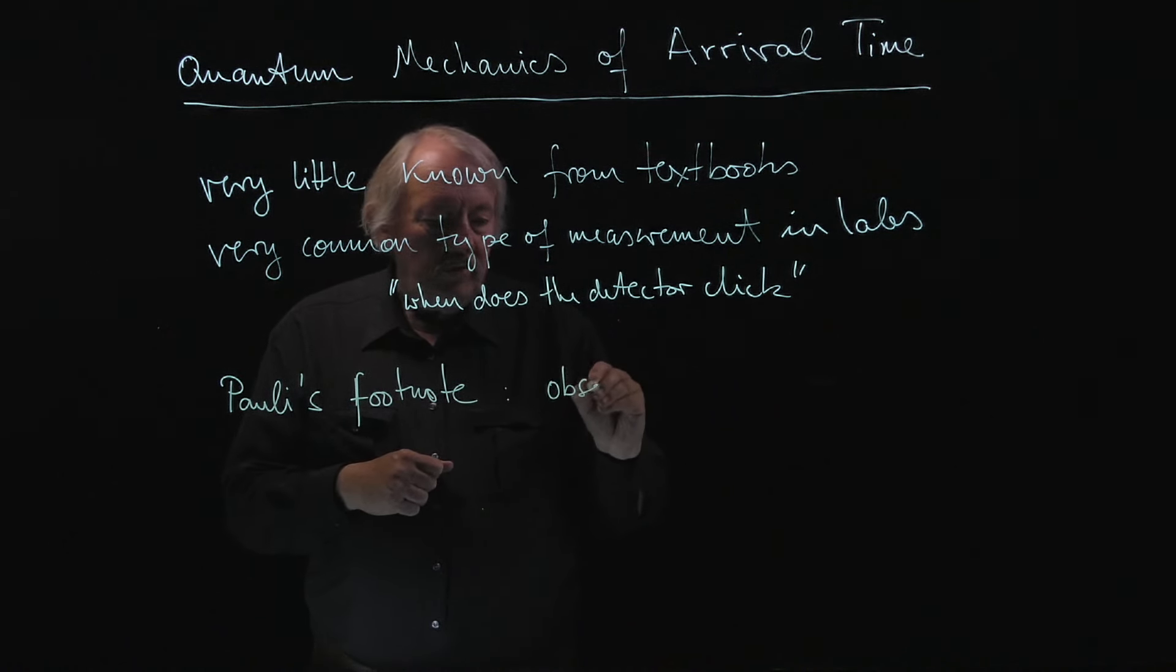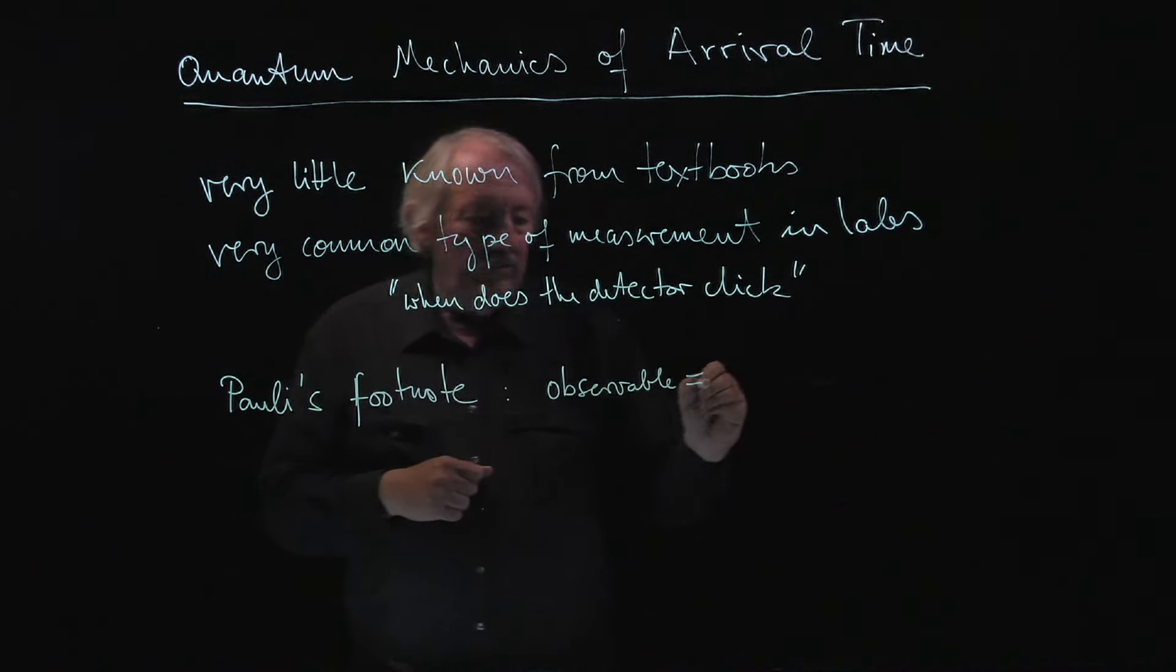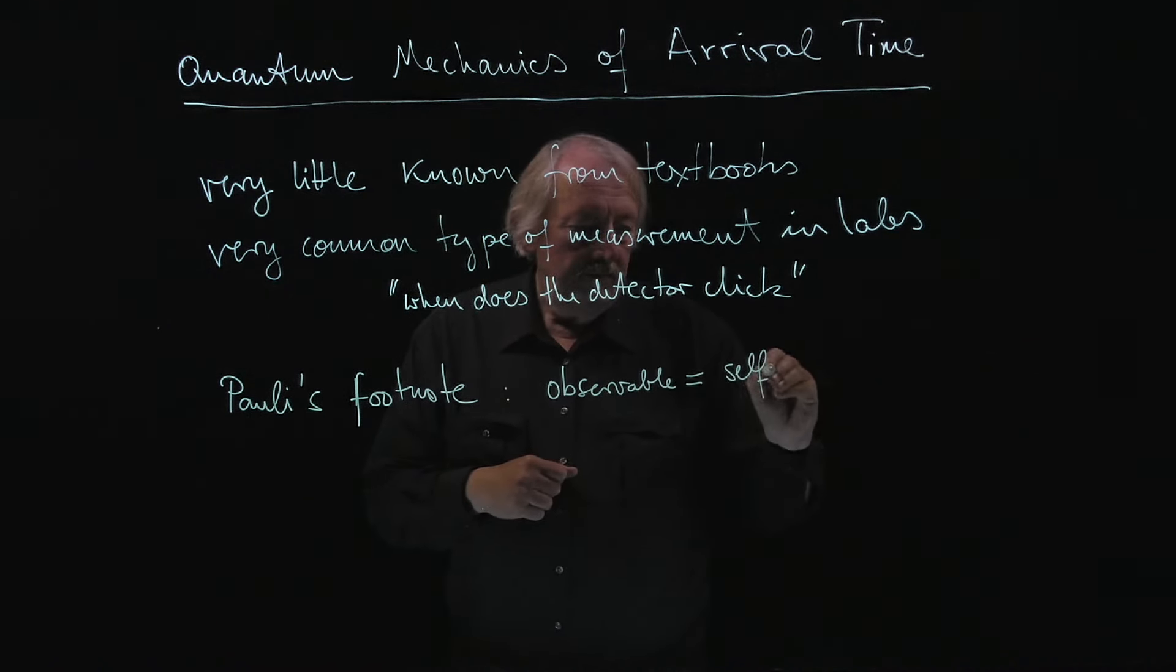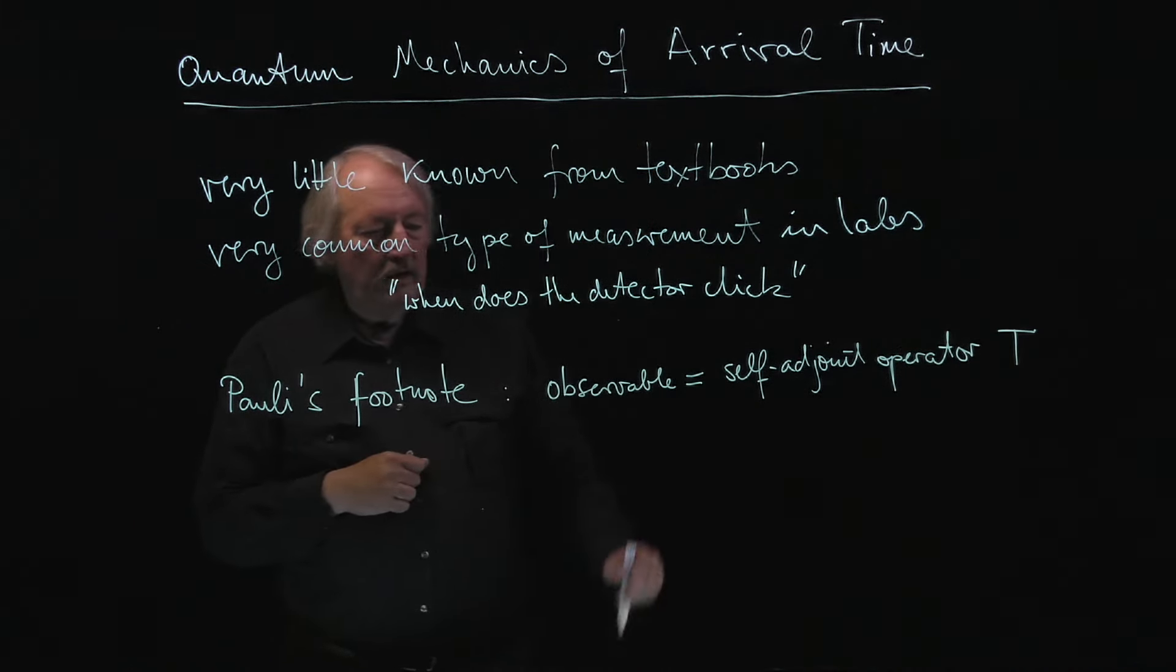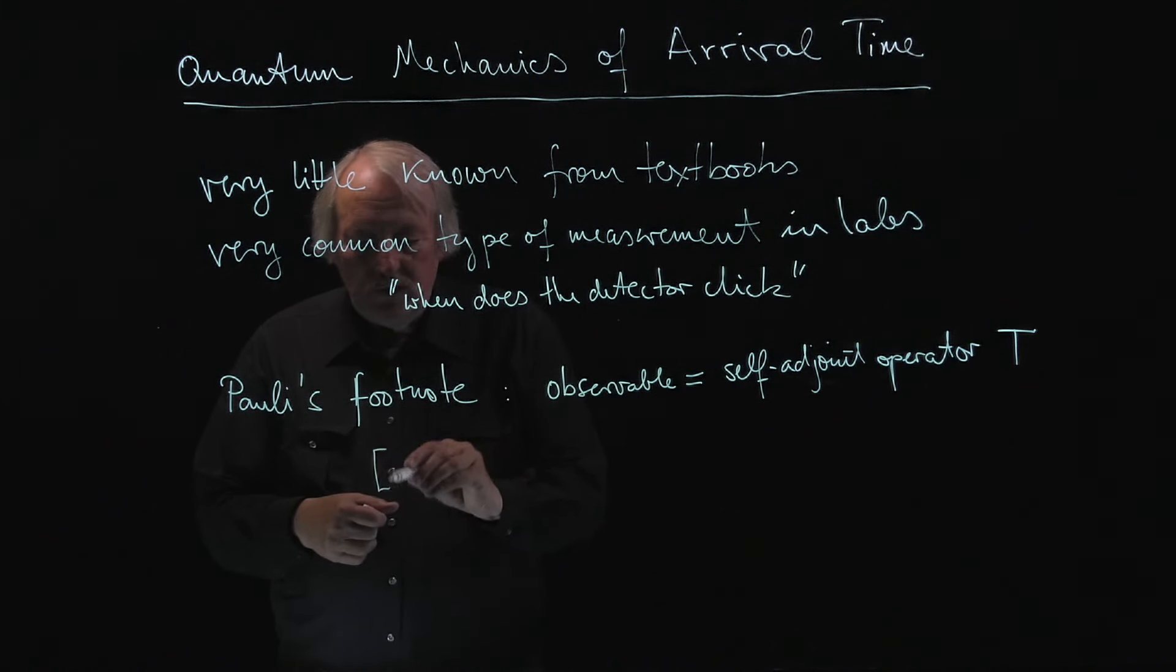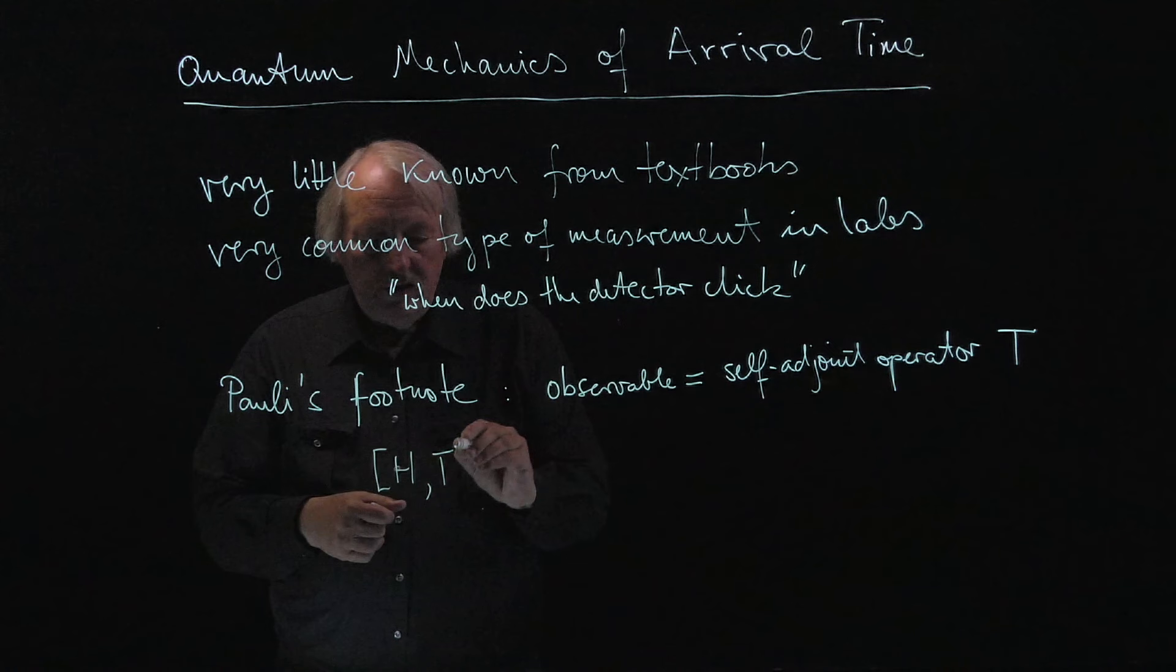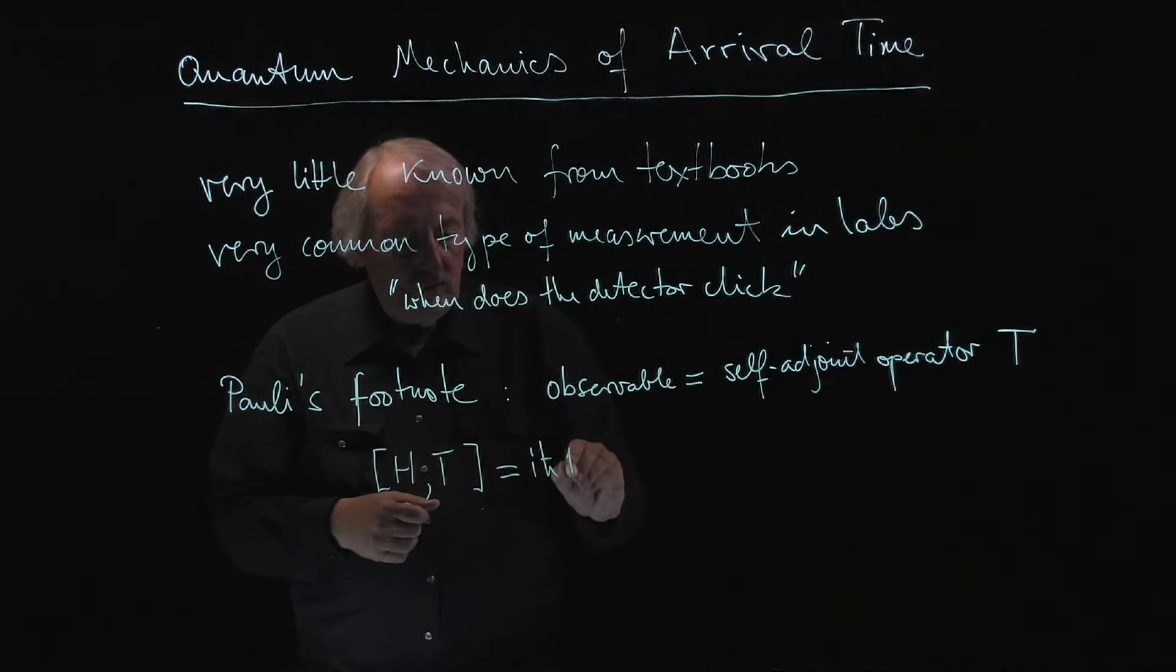So for Pauli, an observable is just the same as a self-adjoint operator. So whatever is going to be the time should be a self-adjoint operator T. Then the relation between time and energy should be just a commutator, like this. That is the identity.